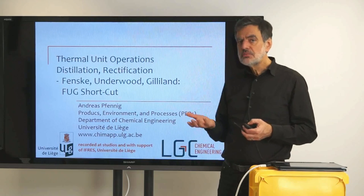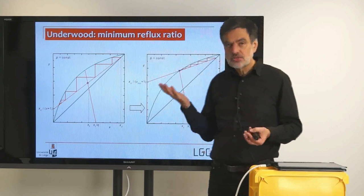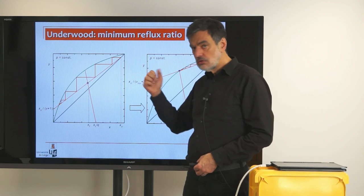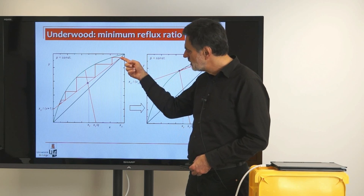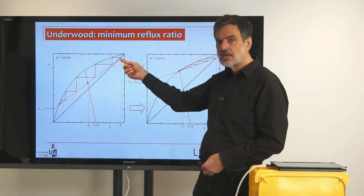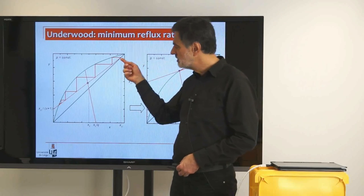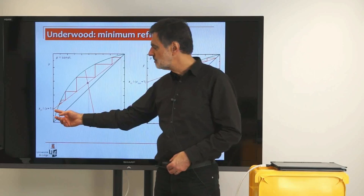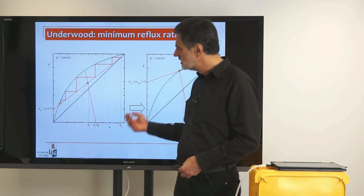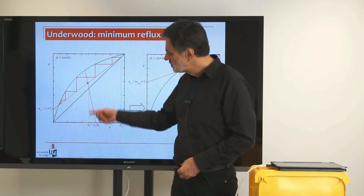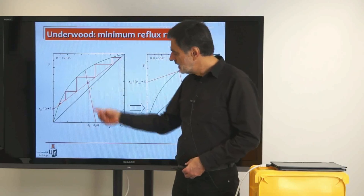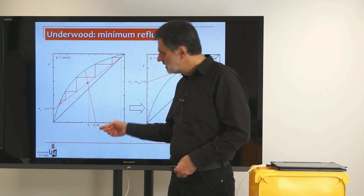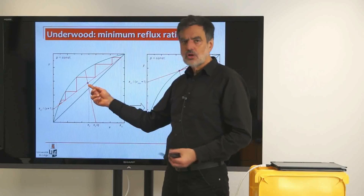We want to determine the minimum reflux ratio. We know how it works from discussing the McCabe-Thiele diagram, and this is shown here. We know that we have the rectifying line which has to run through xd on the diagonal — that point on the diagonal xd is one point of the rectifying line. The second point is characterized as the intersection with the y-axis as being at xd divided by v plus 1. The second line is the intersection line, which has to run through the diagonal again at xf and has an intersection with the x-axis at xf over q. These two lines intersect, and the stripping line also has to run through that intersection point.